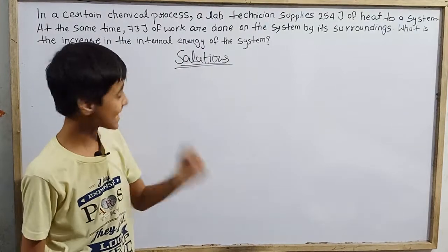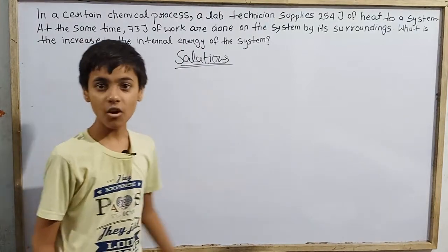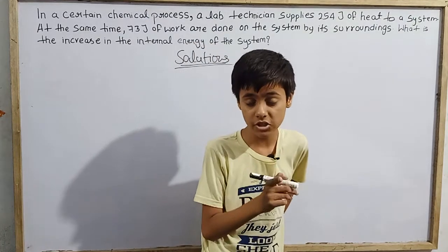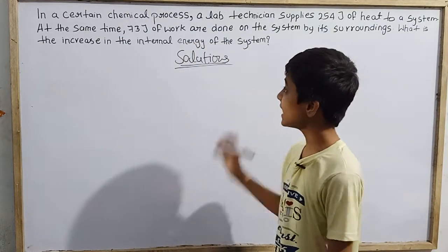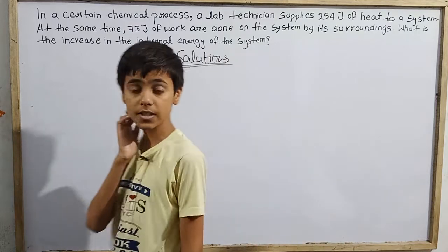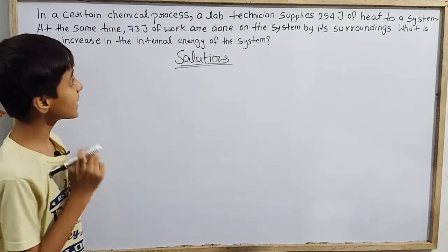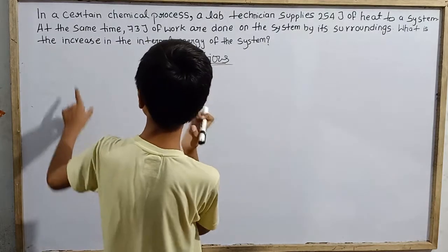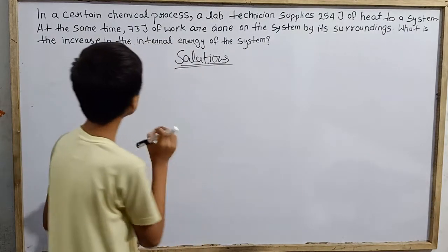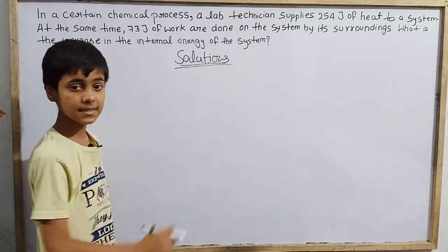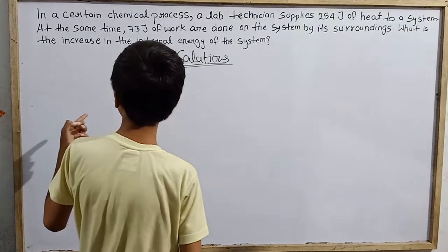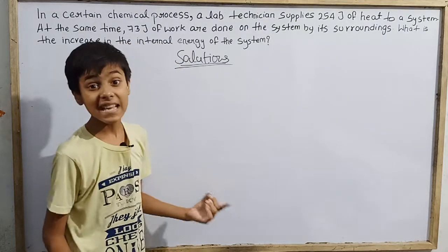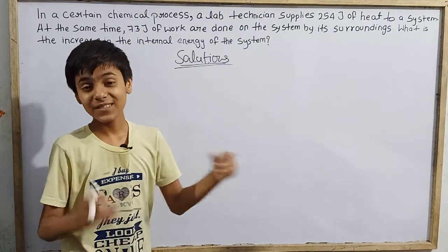Again with a new topic, and today we are going to do a question on thermodynamics. In a certain chemical process, a lab technician supplies 254 joules of heat to a system. At the same time, 73 joules of work are done on the system by its surroundings. What is the increase in internal energy of the system? A truly easy question.